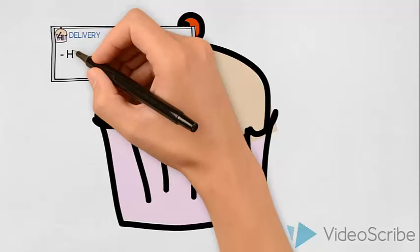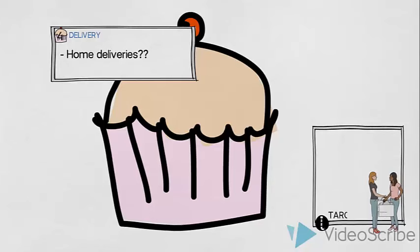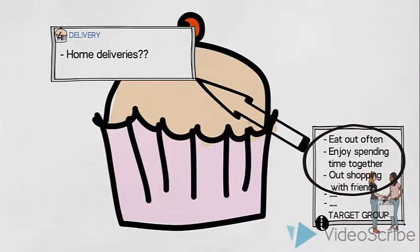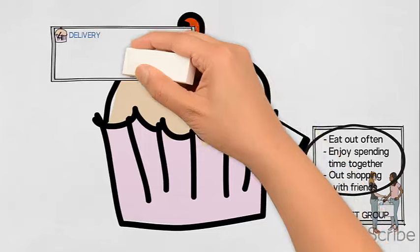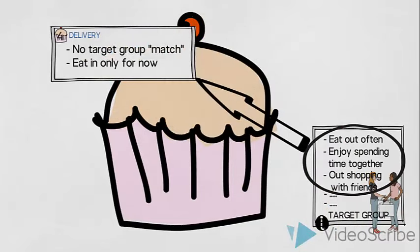Delivery. We could consider offering a home delivery of cakes and desserts. This might make us stand out from the competitors, but since our target group is more likely to eat out, we will exclude this idea for now. And not included in our product offering.